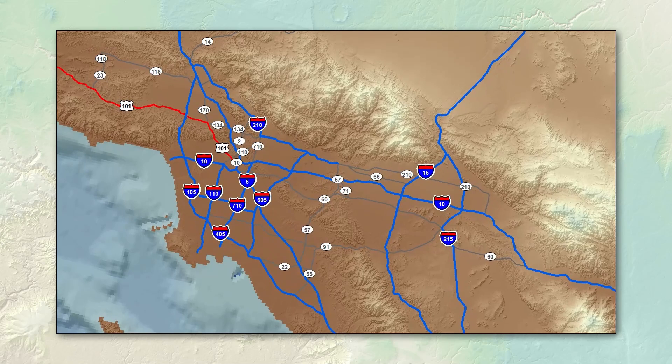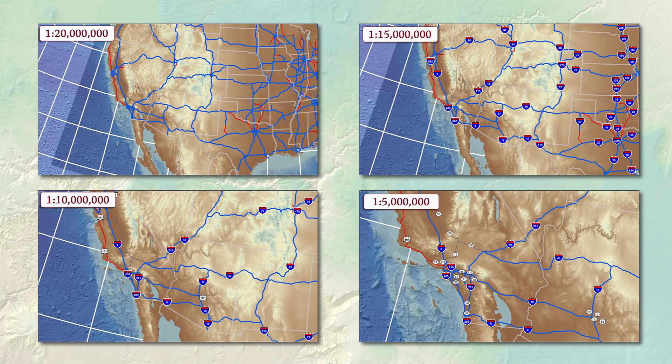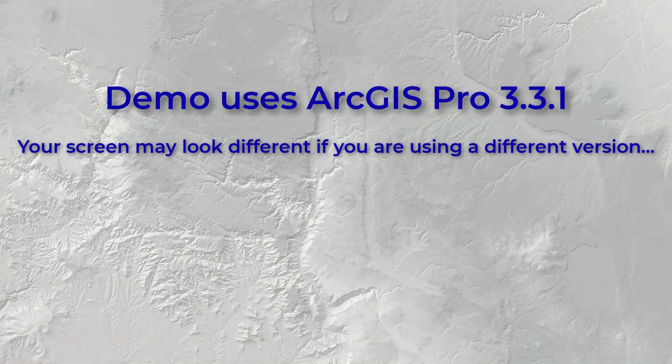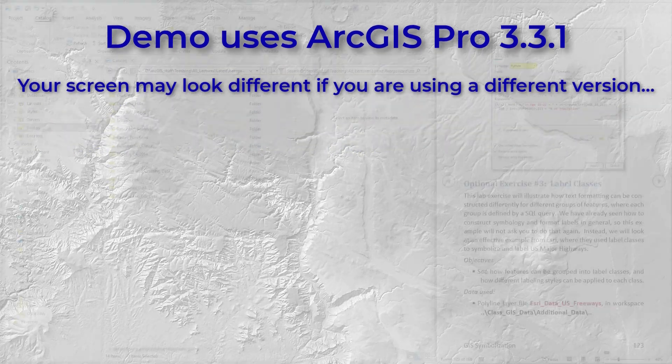We've already seen how to construct symbology and format labels in general, so this example is not going to ask you to do that again. Instead, we're going to look at an effective example created by Esri where they use label classes to symbolize and label US major highways. In this demonstration I'm going to be using ArcGIS Pro version 3.3.1.